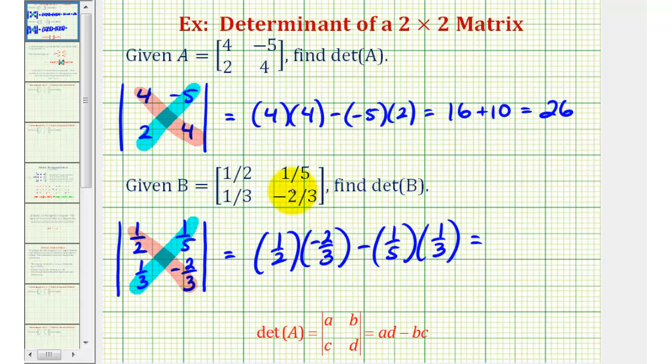So this first product simplifies to negative one-third, and then we'll have minus one-fifteenth. To find this difference, we have to obtain a common denominator, which would be fifteen. So multiply this first fraction by five over five.